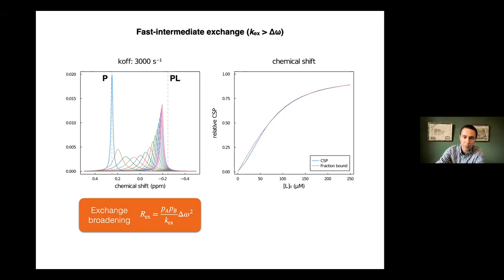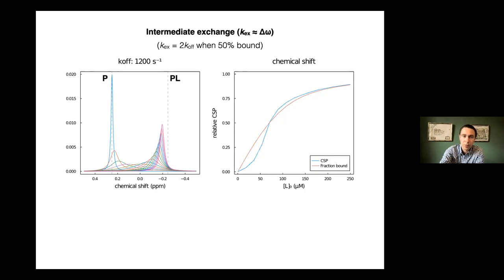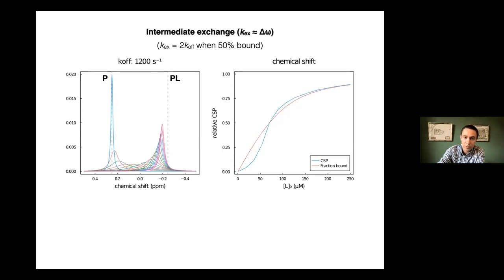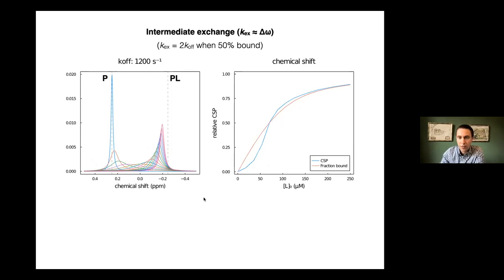In intermediate exchange, the off rate or exchange rate becomes comparable to the frequency difference. There's a divergence: the chemical shift perturbations no longer accurately represent the fraction bound. It's not necessarily easy to tell from your spectra alone if you're in this regime, so using chemical shift differences for analyzing a titration in this regime would give fairly inaccurate results.